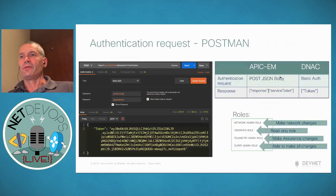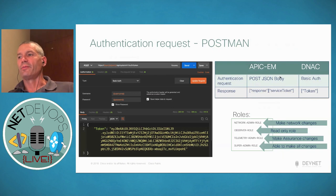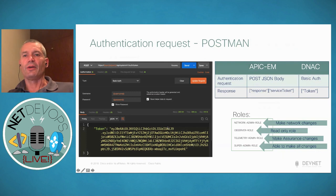On authentication — anyone familiar with APGM knows it was a POST with username and password in the JSON body and you got a response service ticket back. With DNAC it's using basic auth, and you'll get a token in response. The token is a little bit different to the old APGM one. This Postman example shows how you can use basic auth to take a username and password and get a token back. Once you have that token, you need to use it in a header — X-Auth-Token — and all your requests will be authenticated using that token.